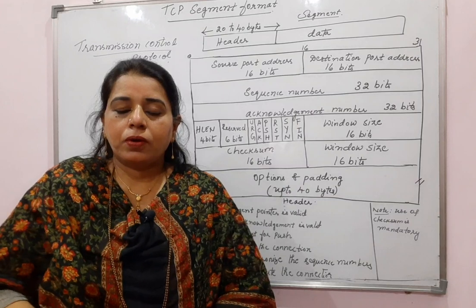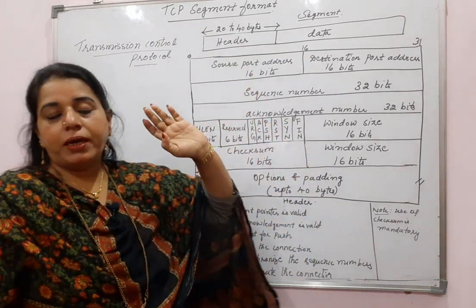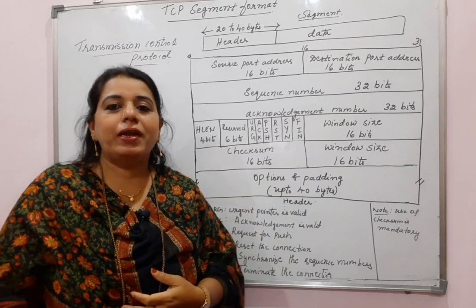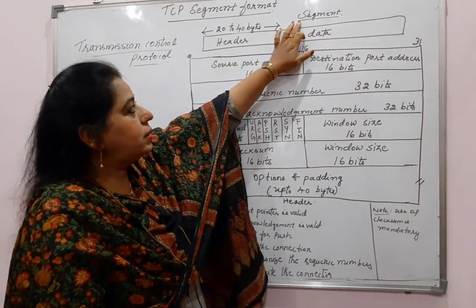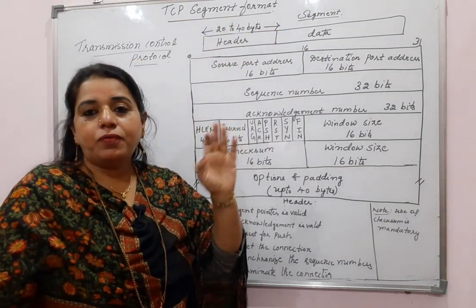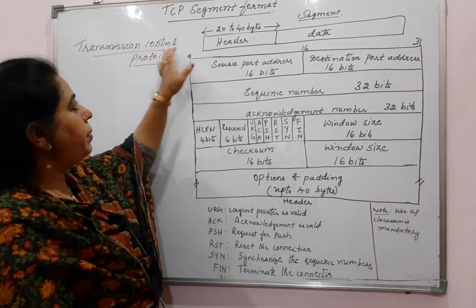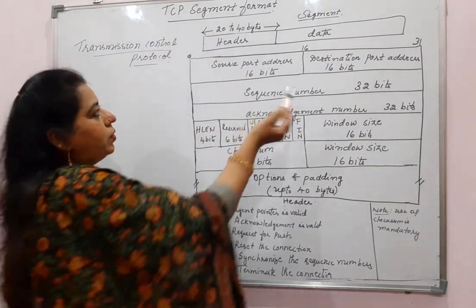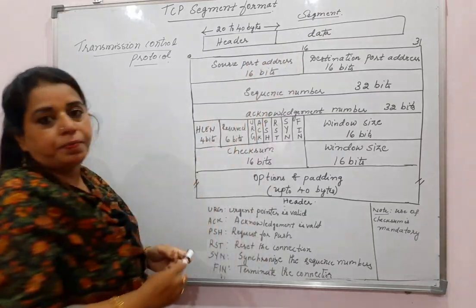Like any other protocol to learn, you always begin with the packet format. The unit of transmission in general we call a packet, but now you should have a habit of calling it a segment for Transmission Control Protocol. For UDP it is user datagram, and for TCP it is called a segment. This segment or packet is divided into two parts: the header part and the data part.